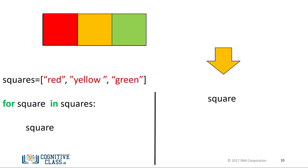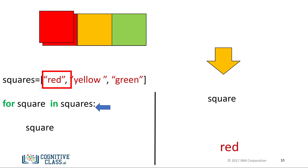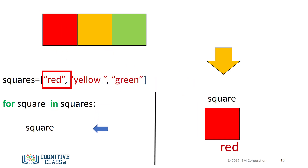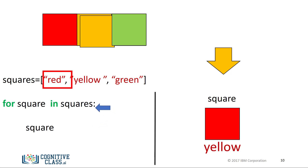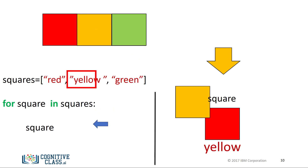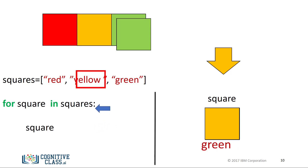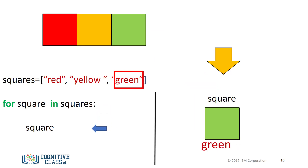We can also iterate through a list or tuple directly in Python — we don't even need to use indices. Here is the list squares. Each iteration, we pass one element of the list squares to the variable square. For the first iteration, the value of square is red. For the second iteration, the value of square is yellow. For the final iteration, the value of square is green.